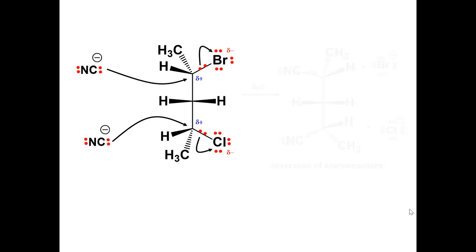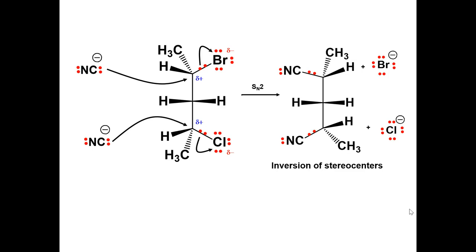The new carbon-carbon bond forms on the opposite side of the carbon-leaving group sigma bond and displaces the leaving group. Inversion of the stereocenters occurs.